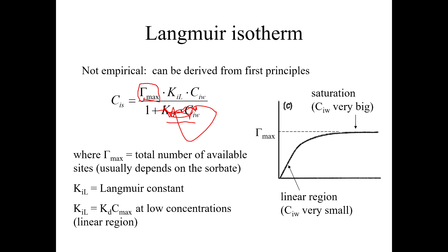If KL times CW is really small and much less than 1, then it goes away. So it's gone. And so then CS is just equal to gamma max times KL times CW. And that, my friend, is the formula for a line. A straight line. And there it is. Straight line. So that's at low concentrations of CW, which makes KL times CW really, really low.